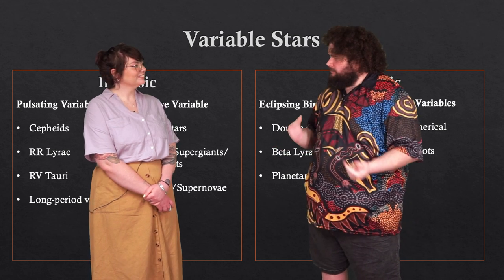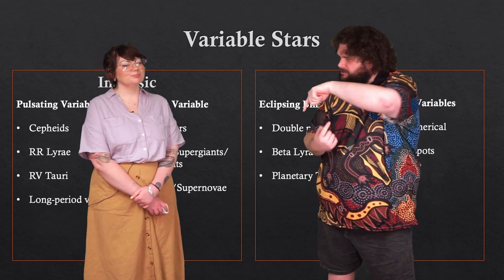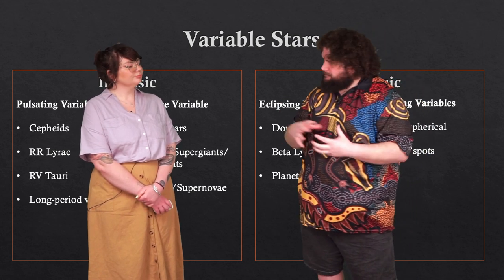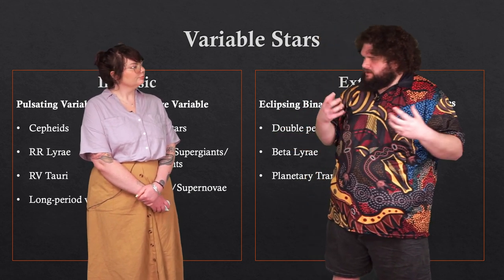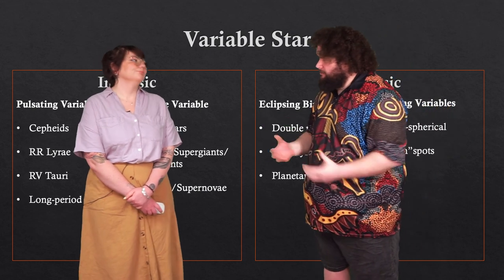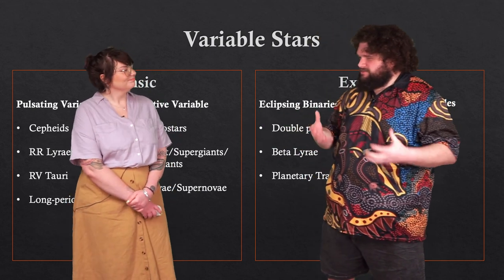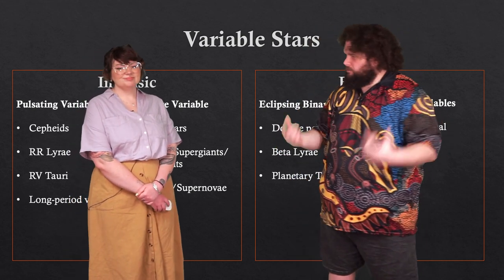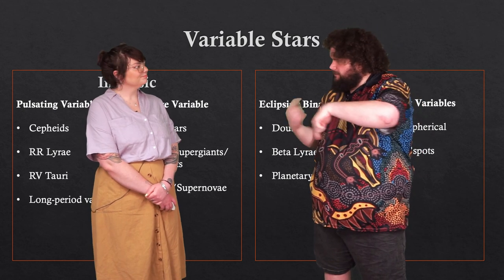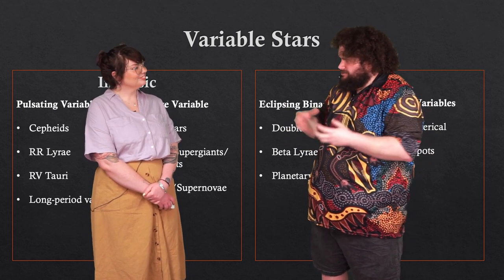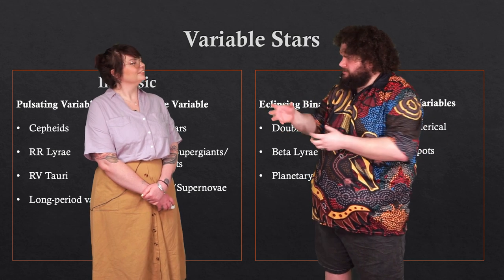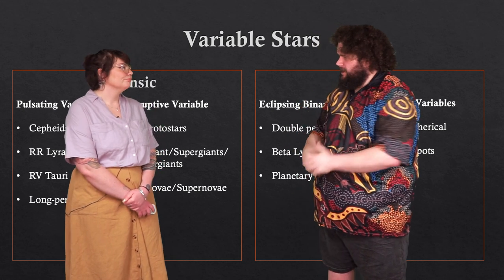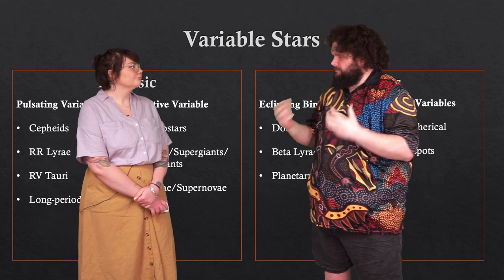Extrinsic variables include binary star systems, where two stars rotate around each other and as one comes in front of the other it blocks some of that light — and even planetary ones. The way we find exoplanets today is an example of this eclipsing binary extrinsic variability. There are also rotating variables, where a star rotates so quickly it becomes ellipsoidal in shape, and as you see different parts of this ellipsoid you see different variations in the light it emits.